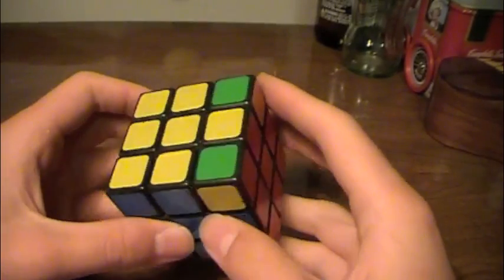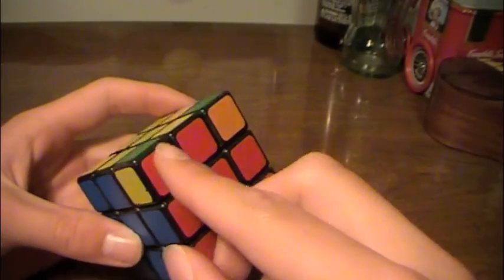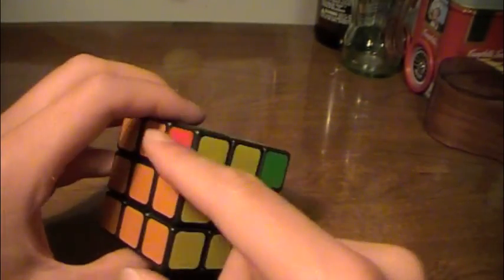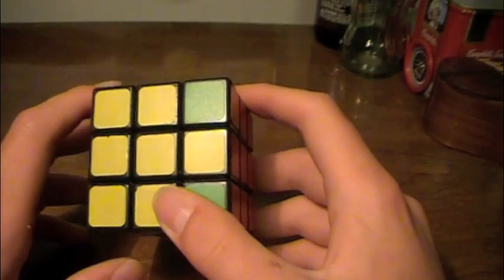Sometimes you will come upon a situation where a normal commutator will not work. Like you can see here, this color matches up but isn't in the right spot, and this, but there's no easy way to swap stuff out. And to solve these, you have to conjugate it.